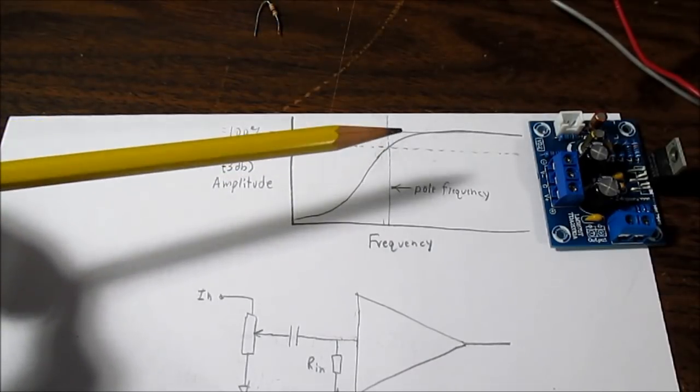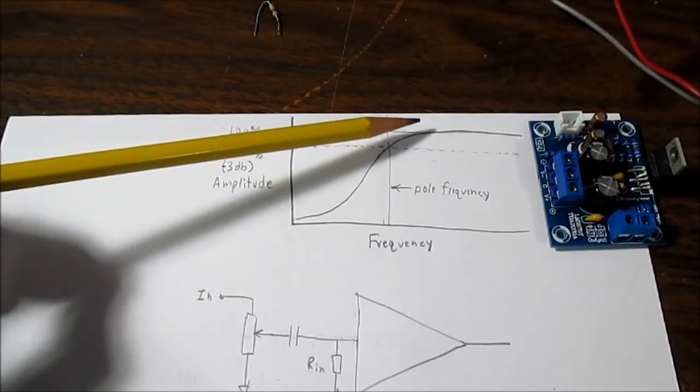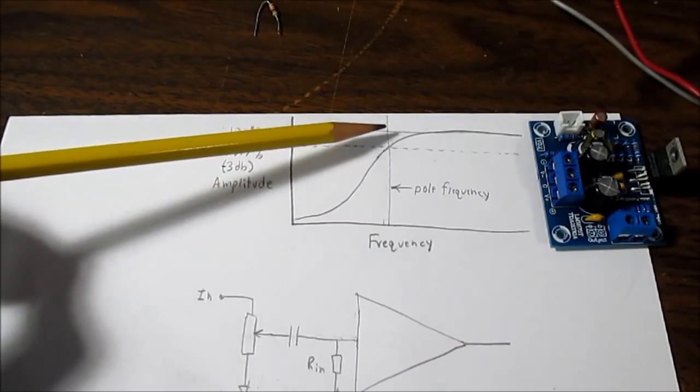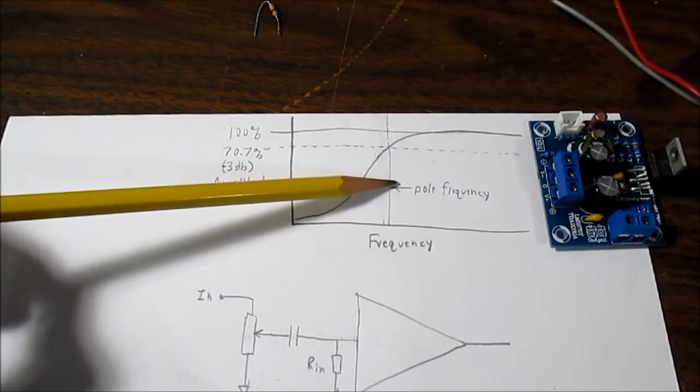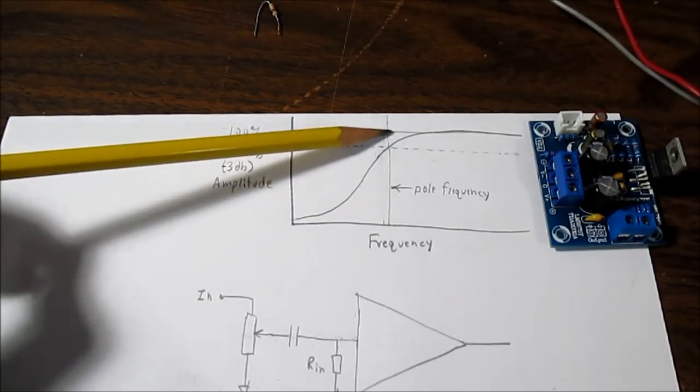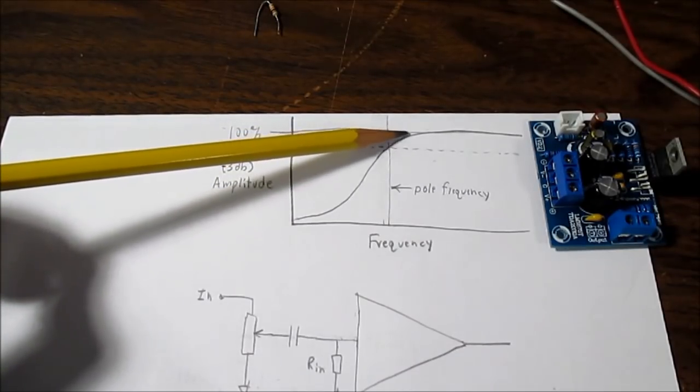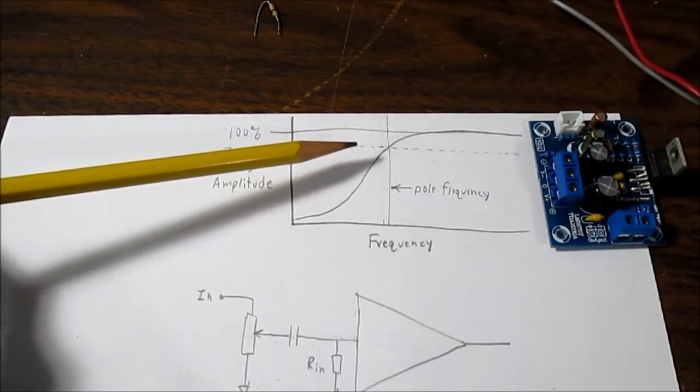So where do we set this pole frequency? Well, the audio spectrum is considered to be 20 hertz up to 20 kilohertz. Would 20 hertz be a good place to set this? Well, not really because you see that signal is already rolling off in the pass band area. And any amplifier designer doesn't want their amplifier showing the signal rolling off in the audio spectrum because that would be just awful. We want to set this pole frequency down more where this curve doesn't intervene with our frequency response of the amplifier.